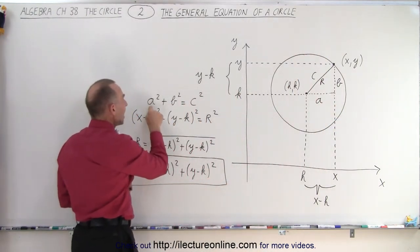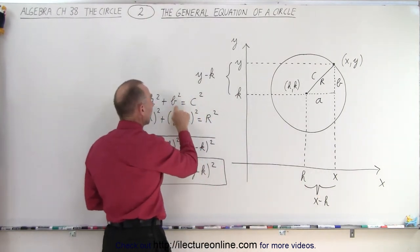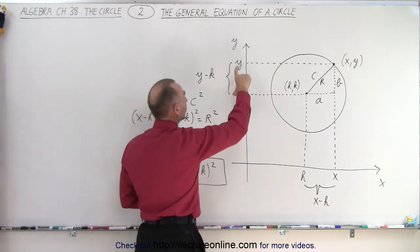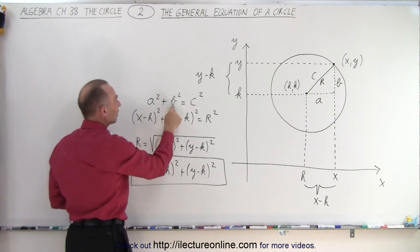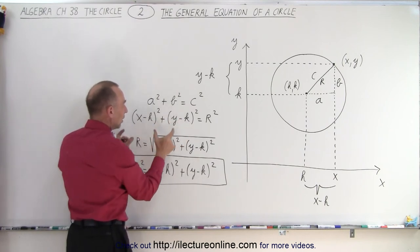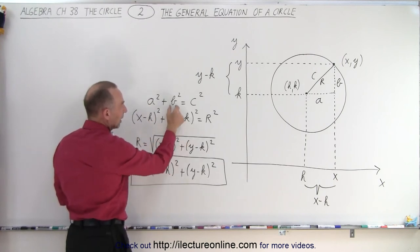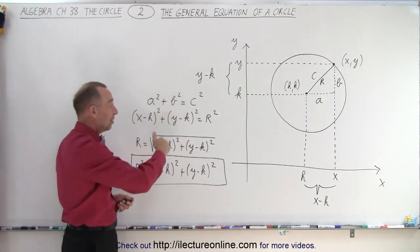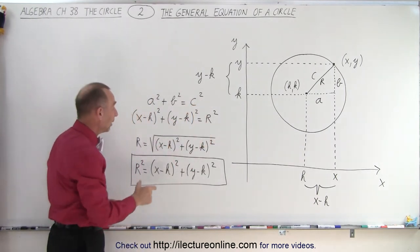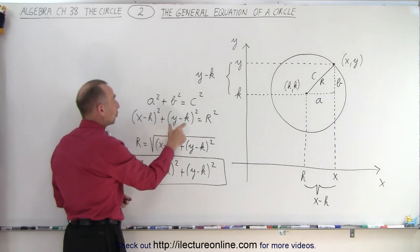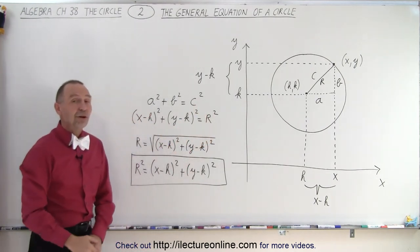So now, instead of calling a, a, we're going to call it x minus h. And instead of calling b, the side b, b, we're going to call it y minus k. So instead of a squared, we get x minus h squared. Instead of b squared, we get y minus k squared. Because x minus h is the same length as a, and y minus k is the same length as b. And of course, the hypotenuse c is simply the radius of the circle. And then we know that x minus h squared plus y minus k squared equals r squared. And that's essentially the equation of a circle.